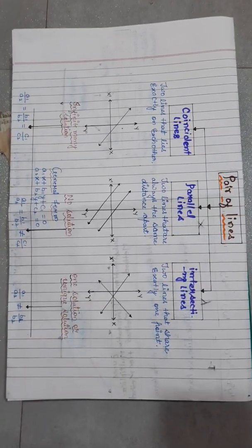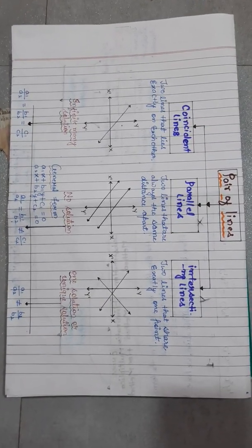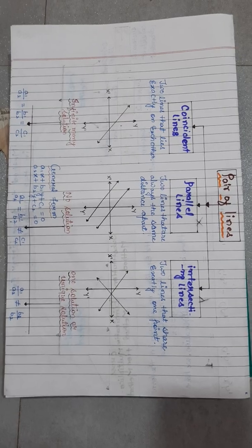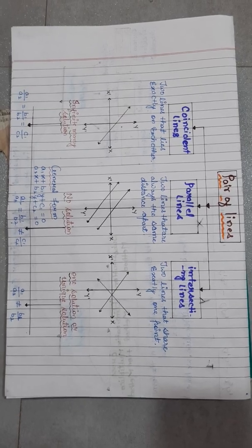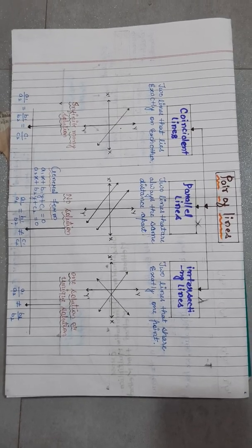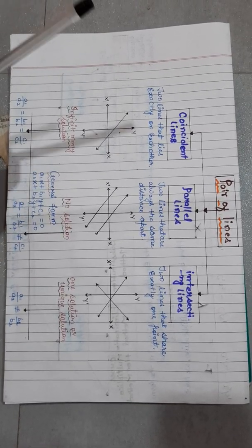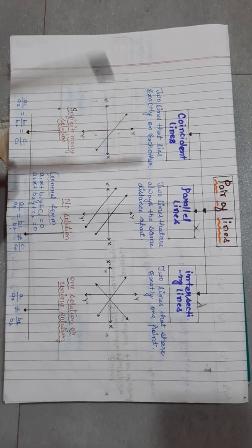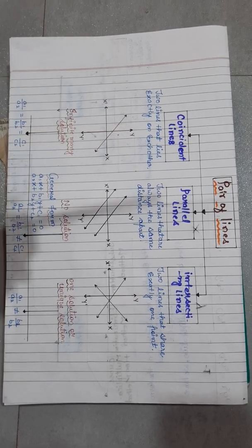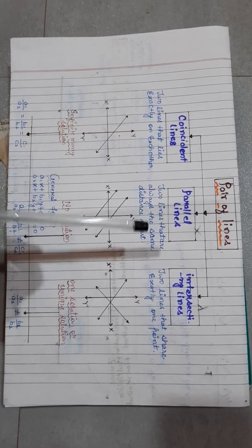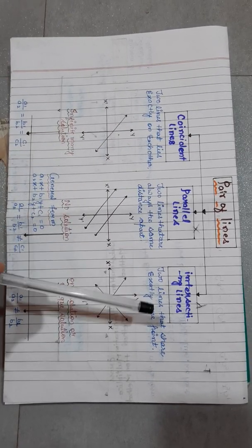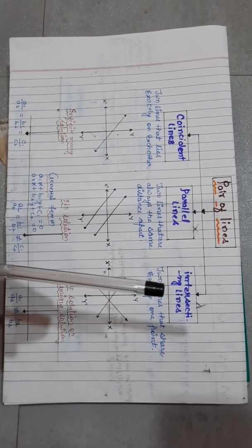Now we will study about the pair of lines. There are three types of lines: first is coincident line, second is parallel line, and third is intersecting line.